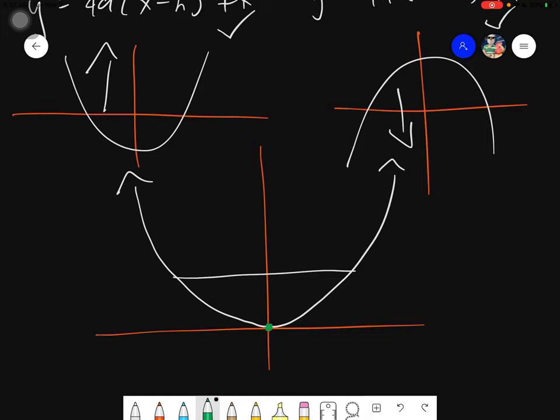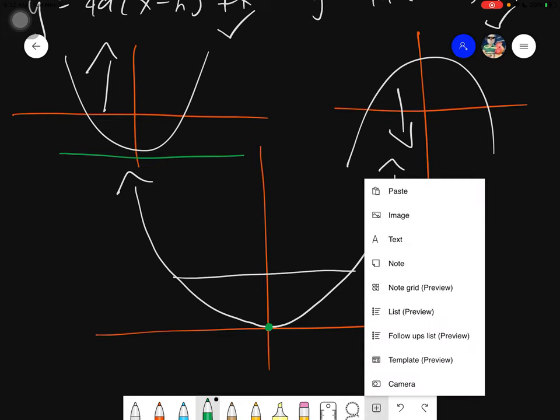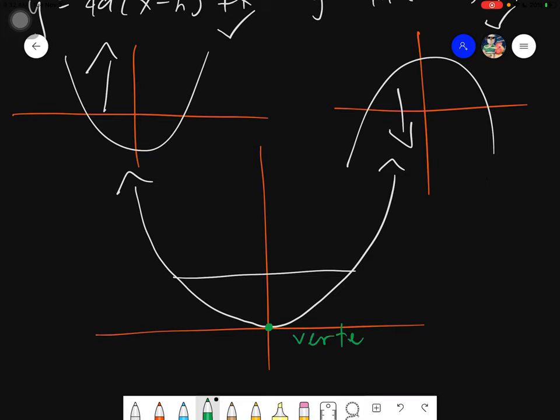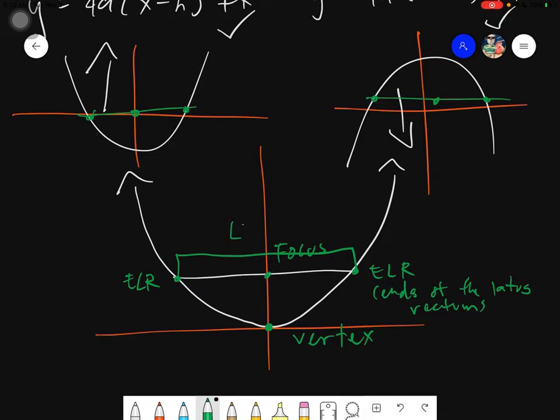The very first one, the tip or the end. It could be either here at the bottom or here at the top. This one is actually called the vertex, the tip or the lowest point or the highest point in our given parabola. Then, above it or below it, this one is called the focus. And then lastly, we will have these two points intersecting the line of the parabola which is also known as our ELRs. ELR is an abbreviation. This one is actually ends of the lattice rectum.